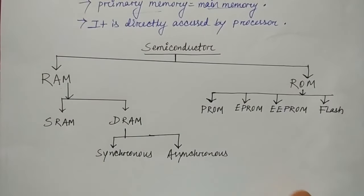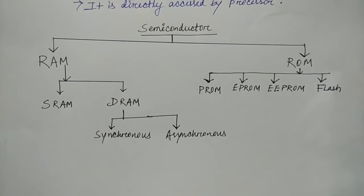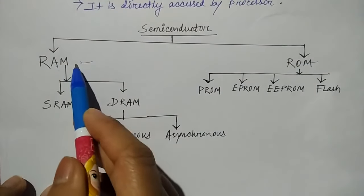Now we will see the parts of it. How many types are main memory? Semiconductor and main memory are of two types: RAM and ROM, that is random access memory and read-only memory.